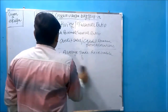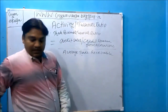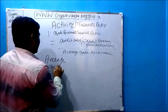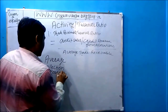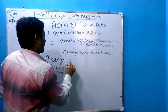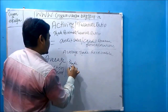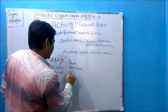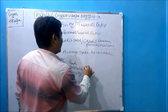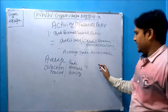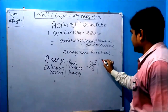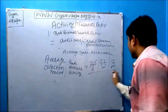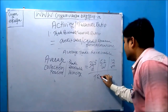Under trade receivable turnover ratio, we also calculate the average collection period — also called debtor velocity or trade receivable velocity — meaning the speed with which the company collects money from debtors. The formula is 365 days upon trade receivable turnover ratio for days, 52 weeks for weeks, or 12 months for months.